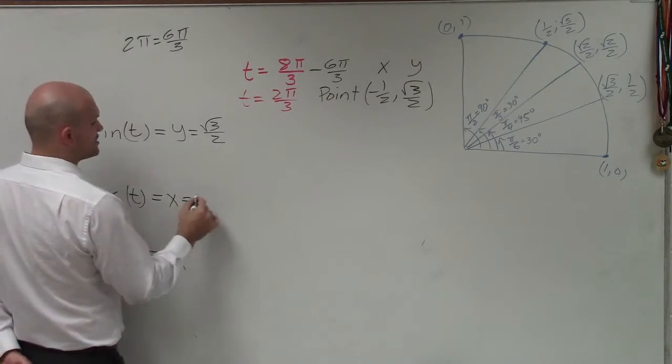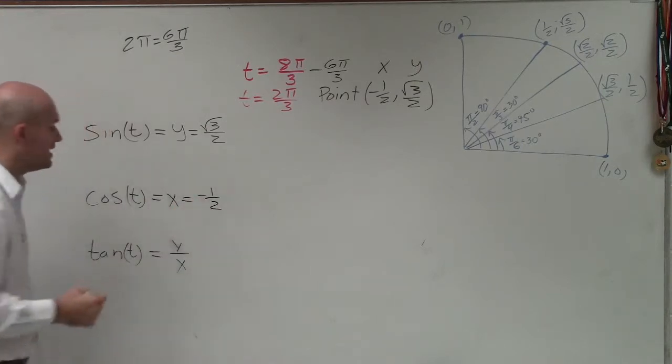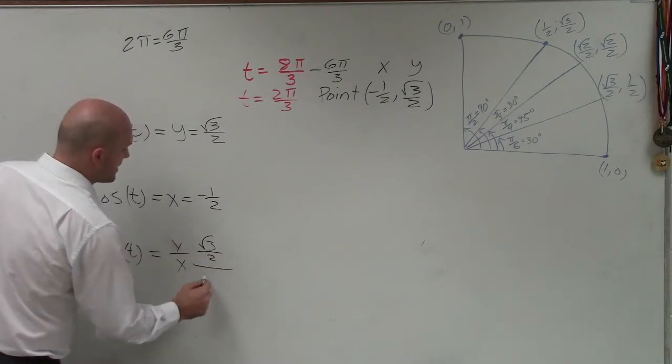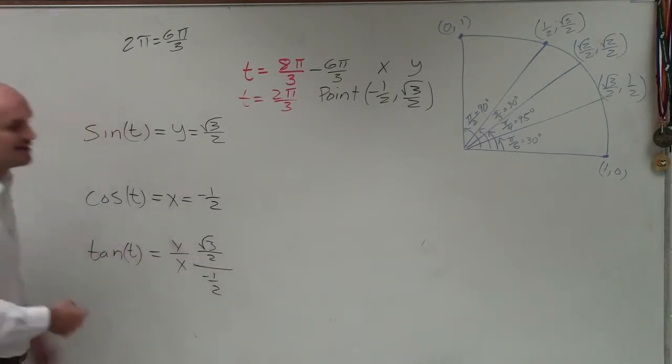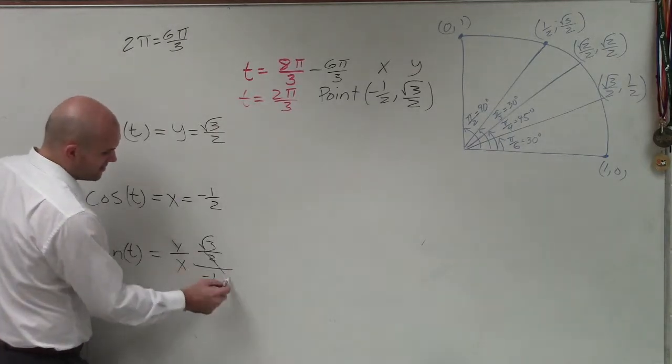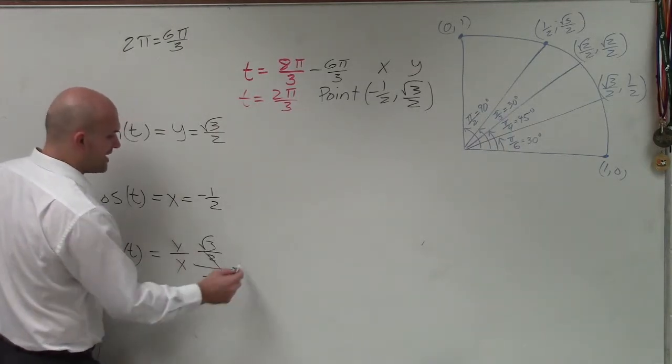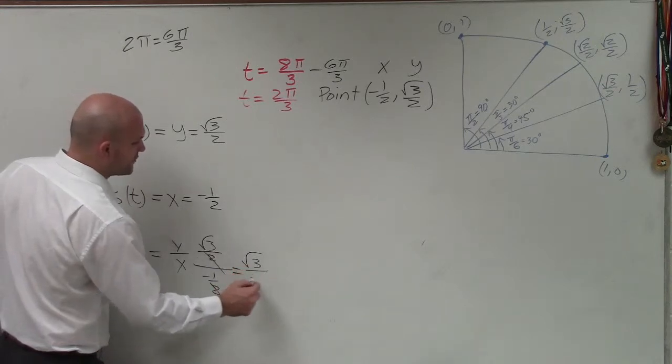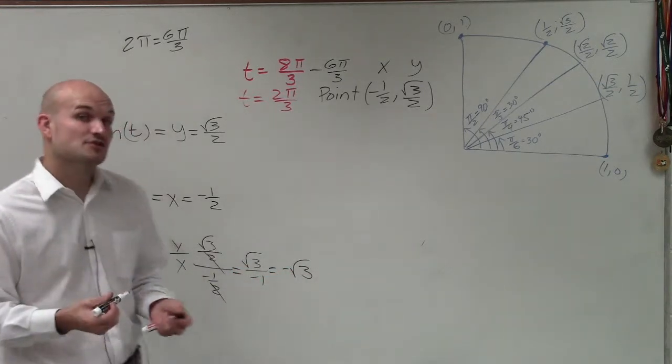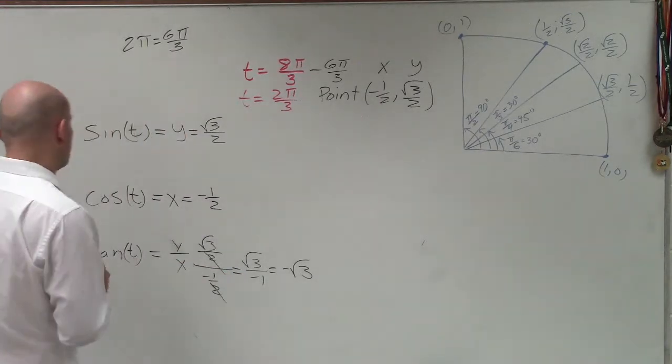So in this case, my sine or my y-coordinate is just square root of 3 over 2. x is my x-coordinate, which is just equal to negative 1 half. And the tangent is equal to the square root of 3 over 2 divided by negative 1 half. Now I can multiply by the reciprocals, or you could also see that these points divide out. So I'm just left with square root of 3 over negative 1, which equals negative square root of 3.